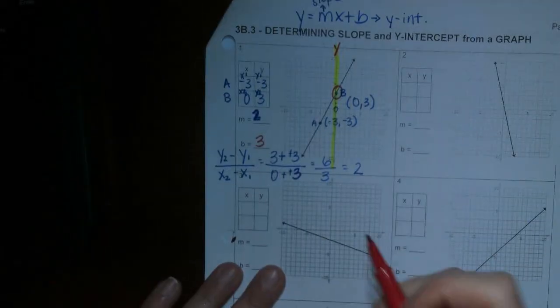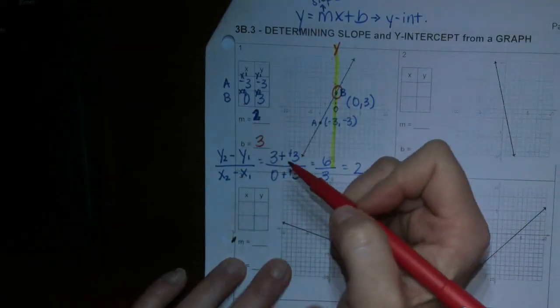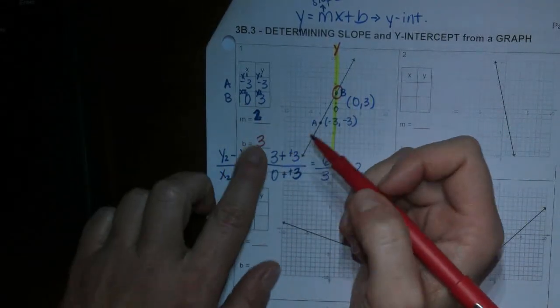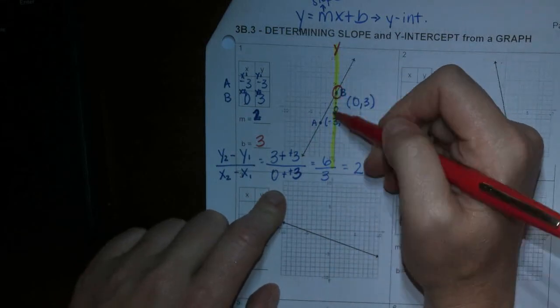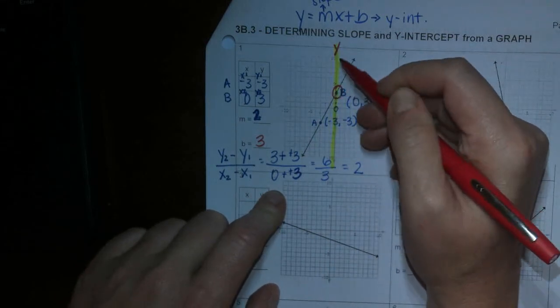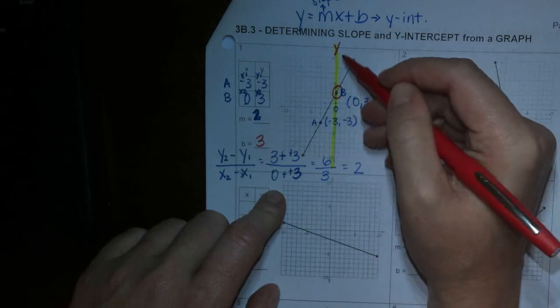Watch. Well, here, our x was 0. So our b is our y-value. And the reason why is because anything that's 0 is going to fall on. When x is 0, the point falls on that y-axis. It intercepts that y-axis.